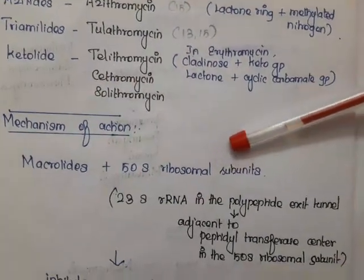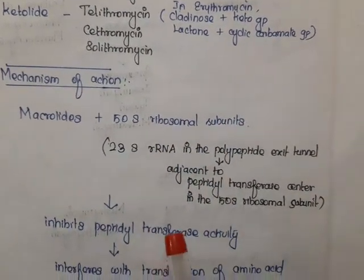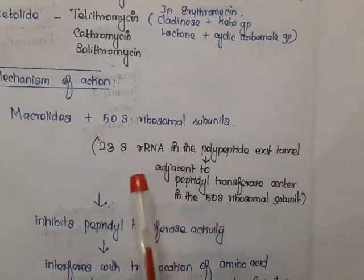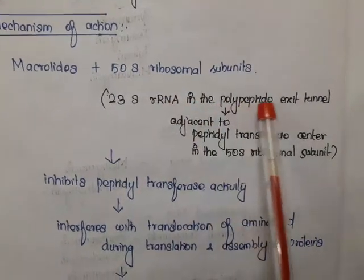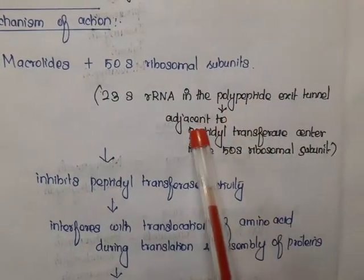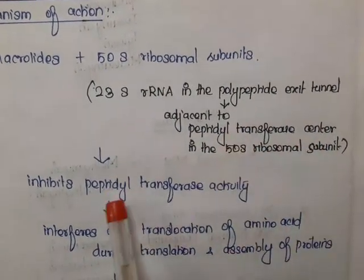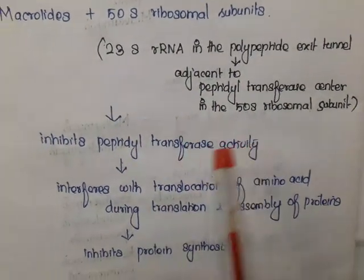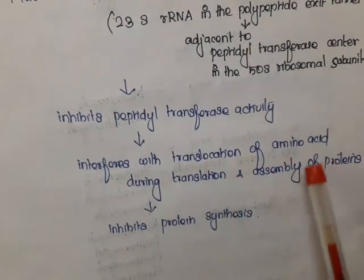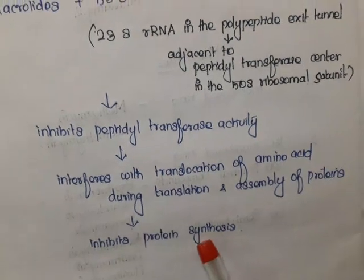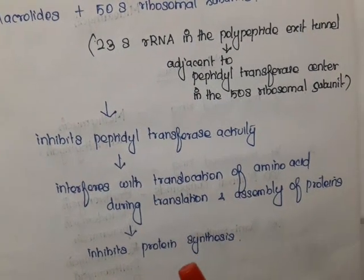The mechanism of action of macrolides: macrolides bind with the 50S ribosomal subunit and inhibit protein synthesis. Specifically, they bind with 23S rRNA in the polypeptide exit tunnel adjacent to the peptidyl transferase center in the 50S ribosomal subunit. This inhibits peptidyl transferase activity and interferes with translocation of amino acids during translation and assembly of proteins, thereby inhibiting protein synthesis.